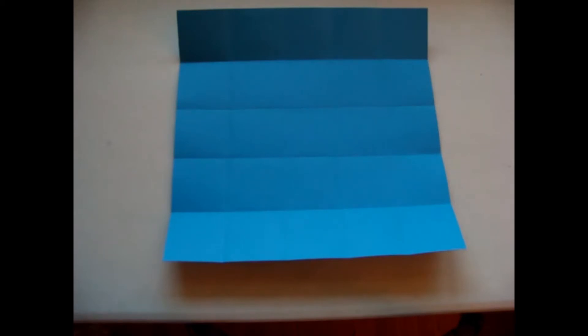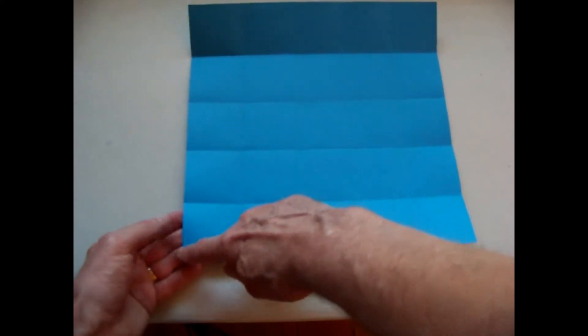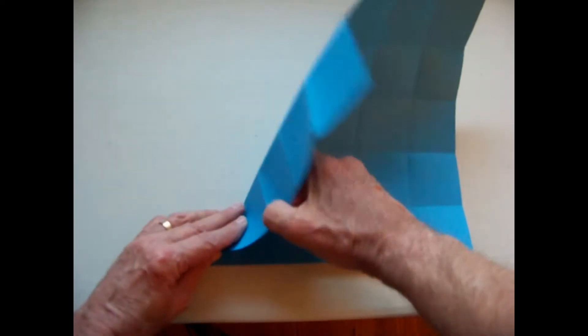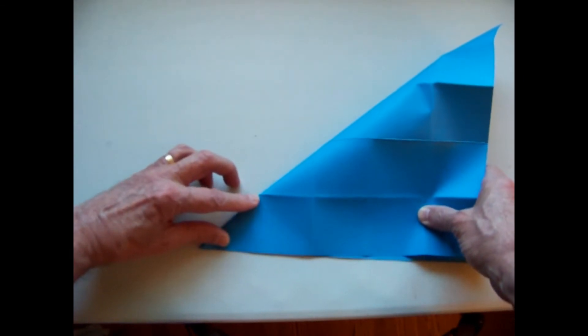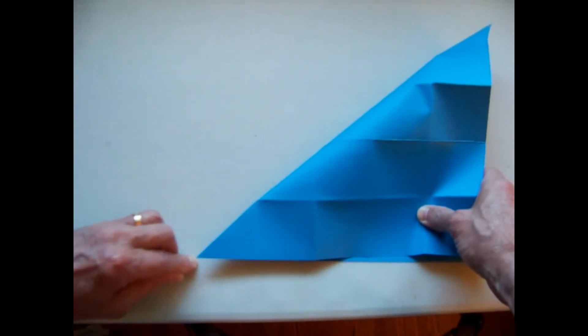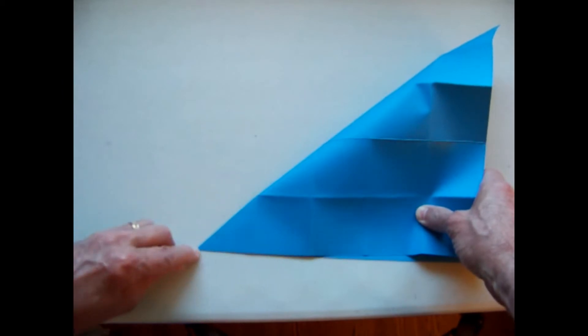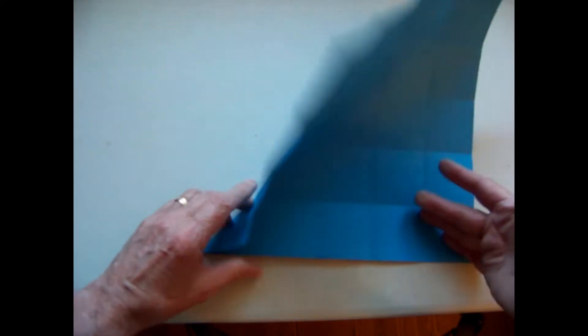The next step is to valley fold and unfold a diagonal on each of the squares on each corner. Notice the crease just across the one square on each corner.